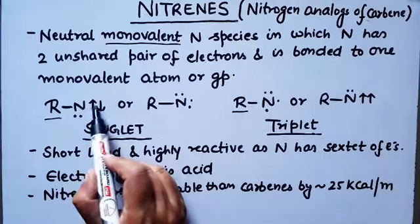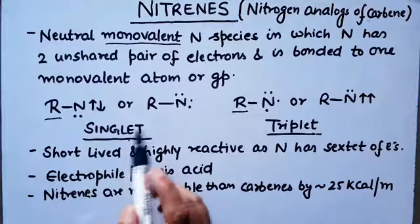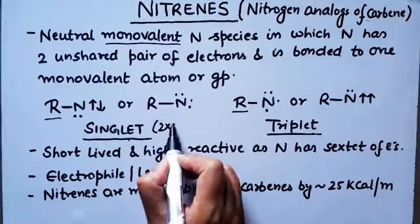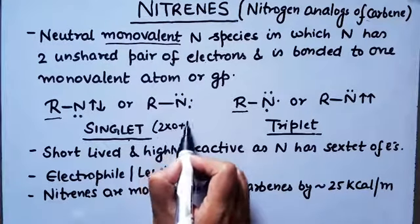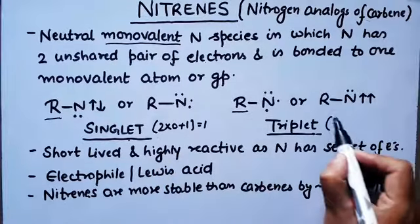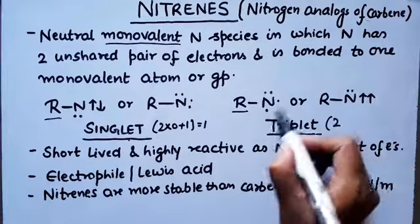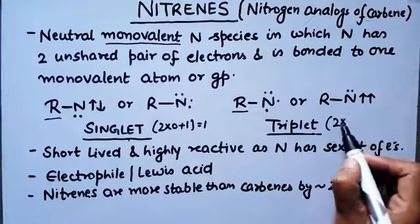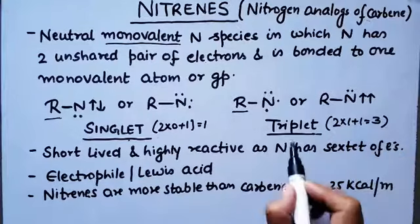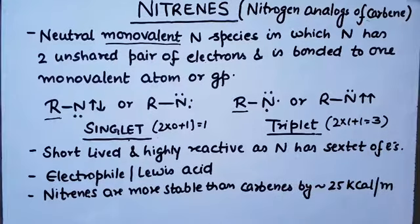For singlet, all non-bonding electrons are paired, so spin multiplicity is 1 (0 unpaired electrons: 2×0 + 1 = 1). For triplet, there are 2 unpaired electrons, so multiplicity is 2×1 + 1 = 3, which is why we call it triplet.